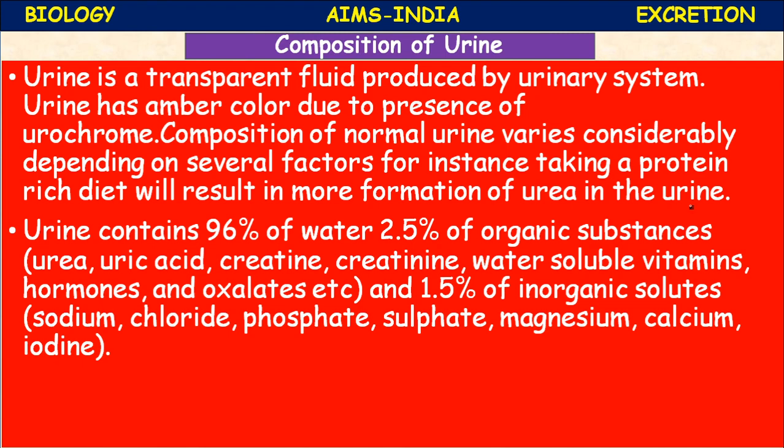For example, taking a protein-rich diet will result in more urea in the urine, because proteins are made up of amino acids which are converted to urea in the liver - since ammonia is more toxic. So if you consume more proteinaceous food, the urine contains more urea. Urine contains 96 percent water and 2.5 percent organic substances.